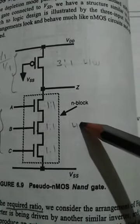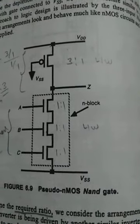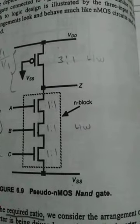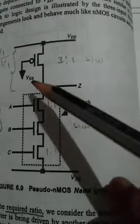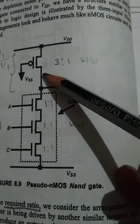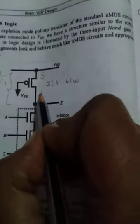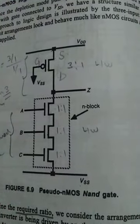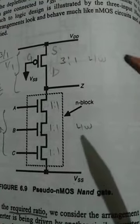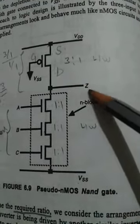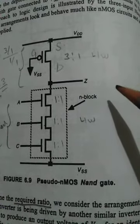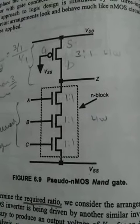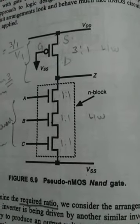In the NMOS circuit, the pull-up network with a depletion mode transistor is replaced by a PMOS transistor. The gate is connected to VCC. For the PMOS: the source is connected to VDD, the gate is connected to ground VSS, and the drain is connected to the output. This structure is called pseudo NMOS logic, and it helps reduce the number of transistors seen in the CMOS logic pull-up network.